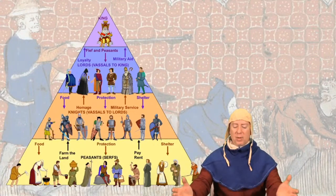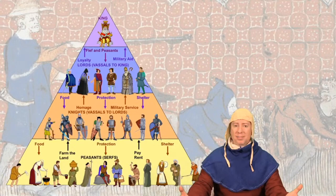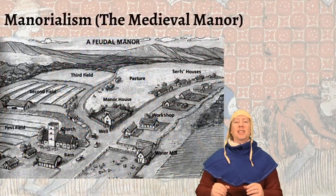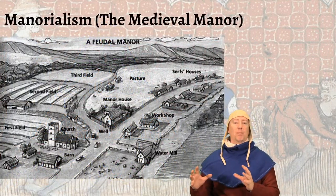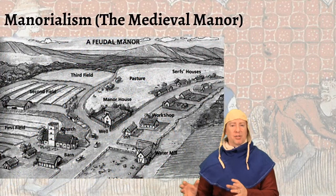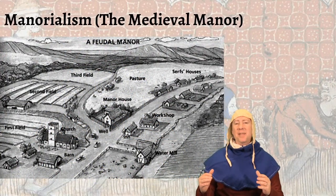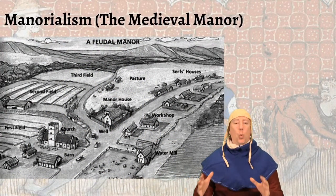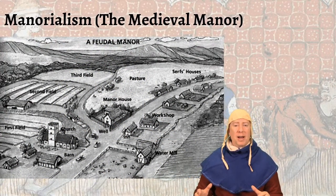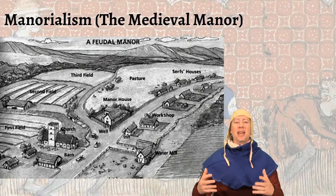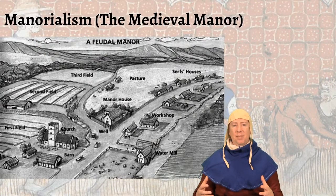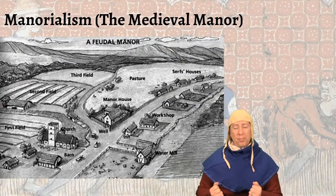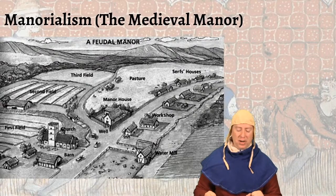Then we've got manorialism. Manorialism is not a social or political structure — it is, in effect, an economic structure. This is how the work that we're talking about gets done. This is the economic system, the go-to-work-and-get-it-done system of the medieval period.